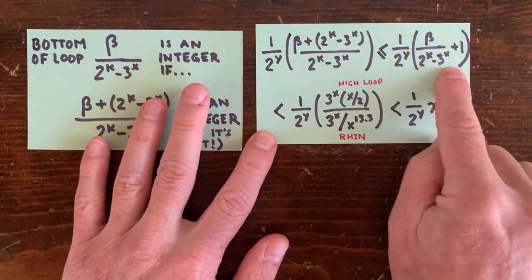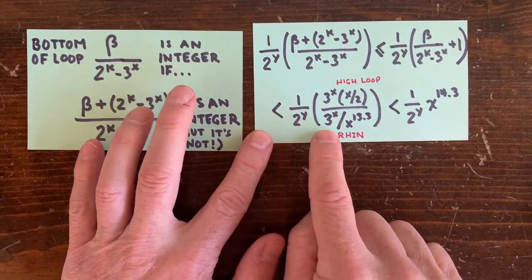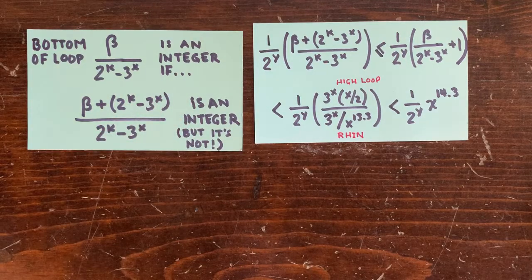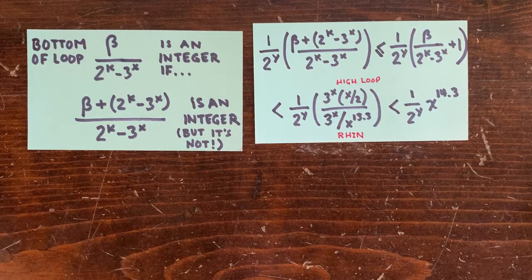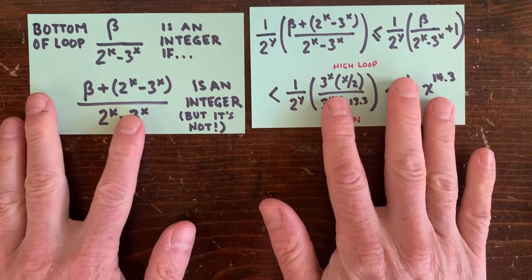And 2 to the k minus 3 to the x has to be bigger than about 3 to the x over x to the 13.3 by the Renn's theorem, about the separation of the powers of 2 and 3.